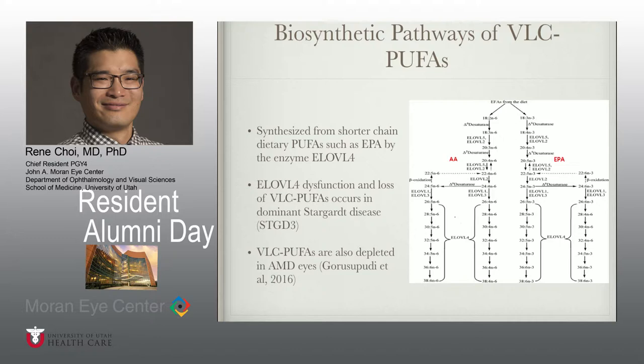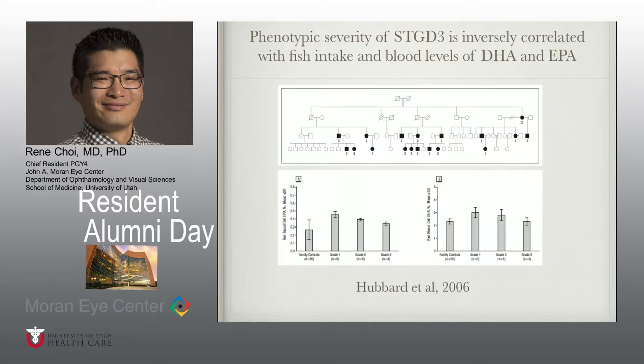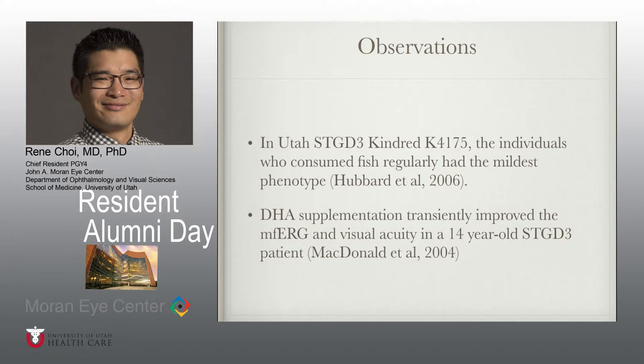Studies have shown that ELOVL4 dysfunction and loss of PUFAs occurs in dominant Stargardt's. PUFAs have also been shown to be depleted in eyes afflicted with macular degeneration. A prior study by our group showed an inverse correlation between phenotypic severity of dominant Stargardt's and blood levels of DHA and EPA, as well as fish consumption — individuals who consumed fish regularly had the mildest phenotype.